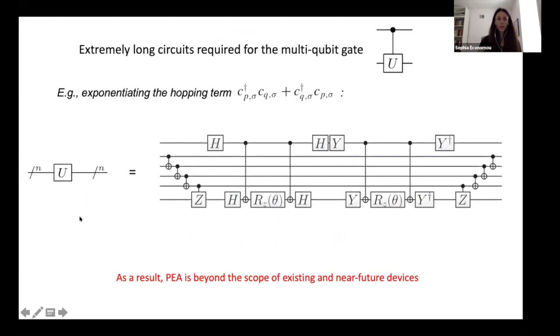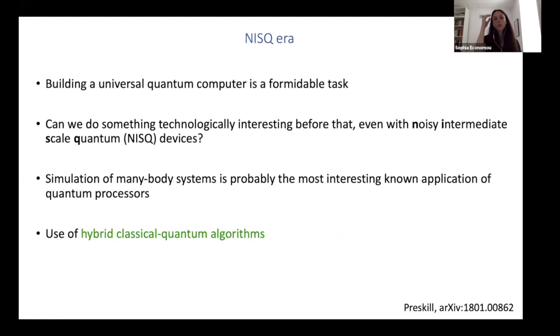So the phase estimation algorithm is beyond the scope of what we can do right now or even in the near future. And for that reason, people have started looking into what can we do with more near-term quantum processors and specifically with processors that also include noise and are not too large, also called NISQ. And simulation of many-body physics is probably the most interesting problem you can solve in these computers. Hopefully you can solve something that you cannot do classically. And even in the long term, this is probably one of the most interesting problems from a scientist's point of view.